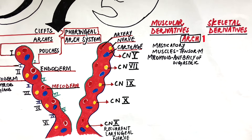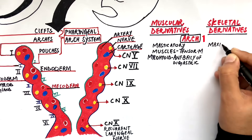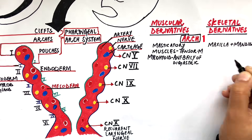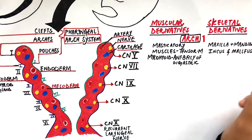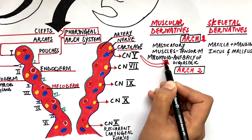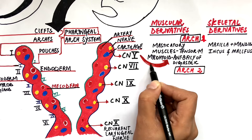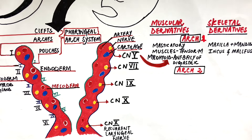The skeletal derivative of the first arch is mainly the maxilla and mandible. Ear bones such as the malleus and incus are also derived from the first arch. The first arch musculature will be innervated by the nerve of the same arch, which is the trigeminal nerve.